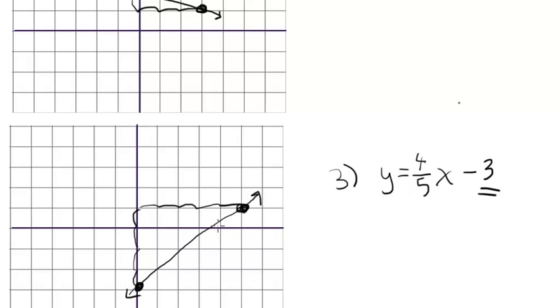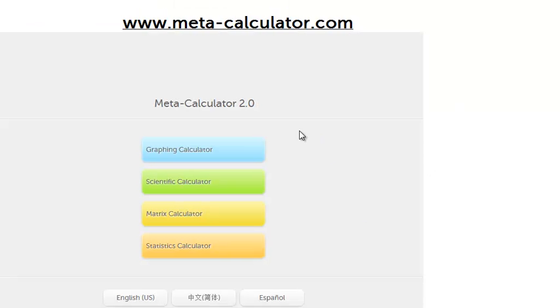That's it for the slope-intercept form of a line. I'd like to conclude by showing you a really cool free tool that produces the graph. And this cool free tool is Meta Calculator. Just go to www.meta-calculator.com.